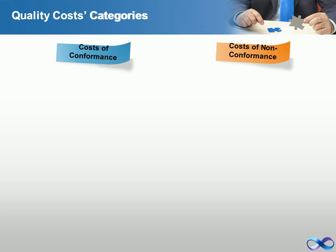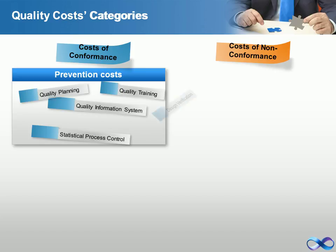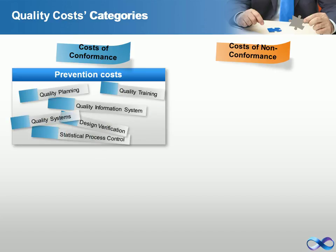Costs of conformance includes two subcategories: prevention costs and appraisal costs. Prevention costs arise from efforts to keep defects from occurring at all. Examples include quality planning, statistical process control, investment in quality-related information systems, quality training, design verification, and systems development.